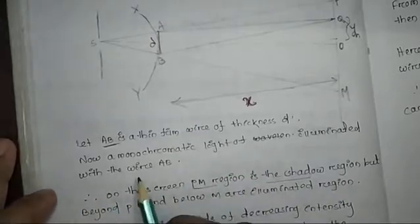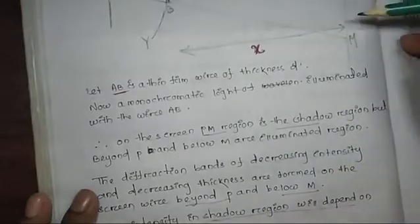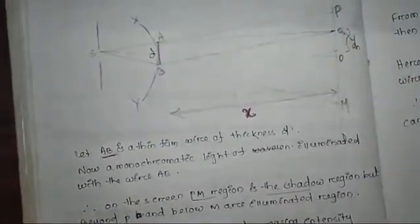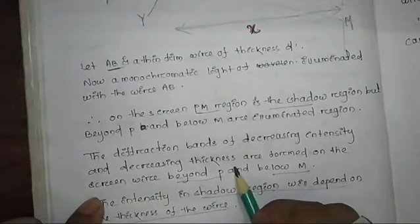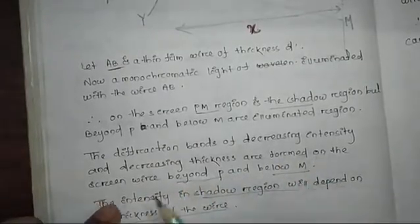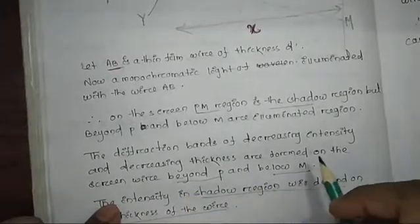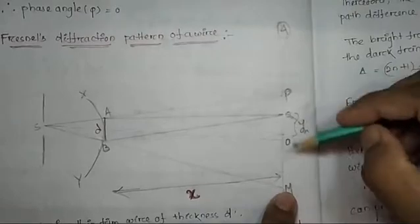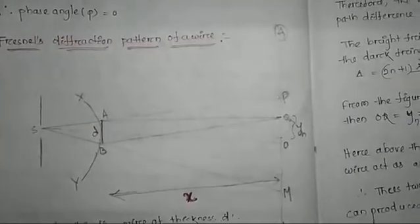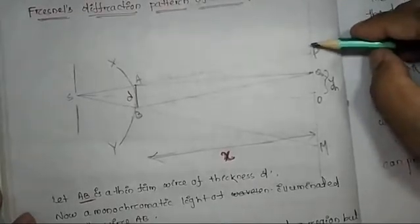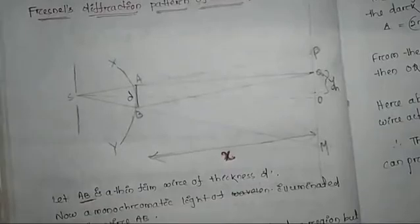AB is the thin wire of thickness D. Monochromatic light illuminates the wire AB, and the PM region is the shadow region. Beyond P and M are called the illuminated region. Diffraction bands of decreasing intensity and decreasing thickness are formed on the screen beyond P and below M. In the shadow region between P and M, a well-defined diffraction pattern can be observed.